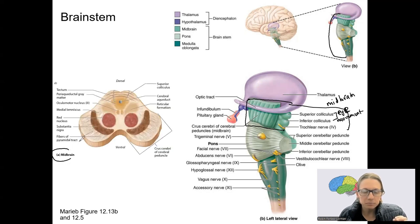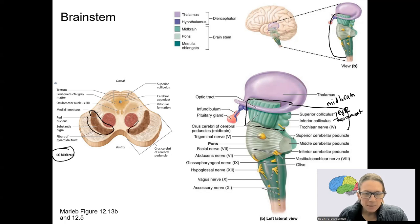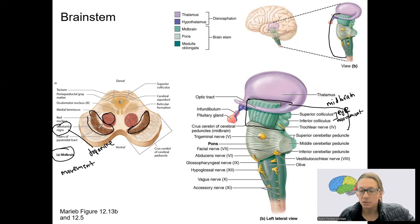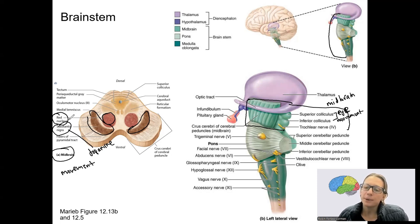Here are some important nuclei within the midbrain. The substantia nigra — which means 'black substance' — contains dopamine cells involved in movement. You may have heard of Parkinson's disease; it's thought to be due to a loss of dopamine in the substantia nigra. This dopamine projects to other brain regions, such as the striatum and basal nuclei, to alter motor control. The red nucleus is another important structure involved in movement, and we'll revisit it when we discuss motor pathways.